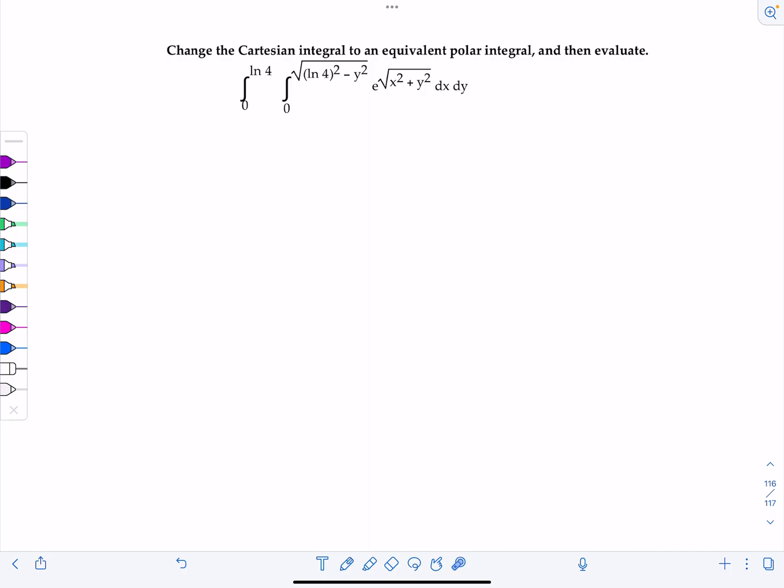Look at the order of integration. We have dx and then dy. That tells me the limits of integration for this inner integral correspond to the limits on x, and 0 to natural log of 4 are the limits to y. So limits for x go from 0 to rad ln of 4 squared minus y squared, and then the limits from y go from 0 to natural log of 4.